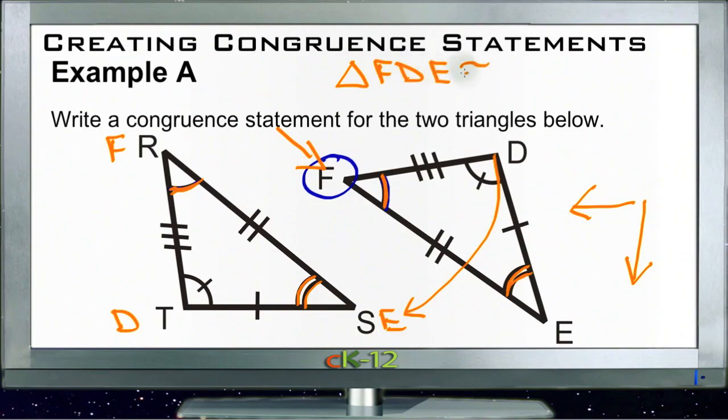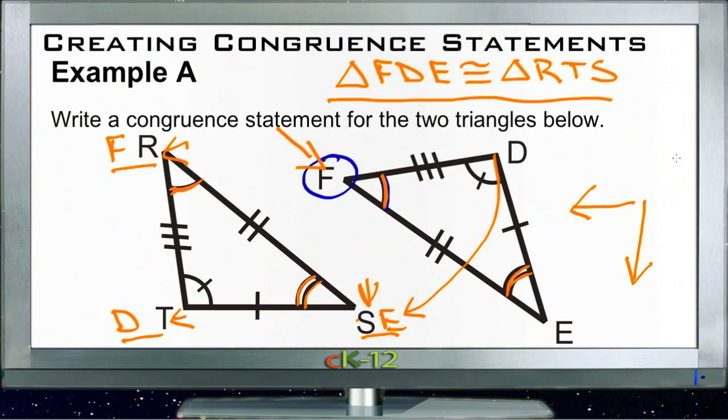Now of course there's a number of different ways we could do that. Once we have those angles set up so that they're corresponding, we can do it anywhere we wanted. We could also say that triangle SRT corresponds to EFD as well, but for one example, triangle FDE is congruent to triangle RTS is a perfectly reasonable answer.